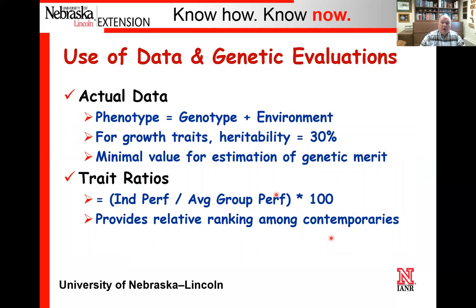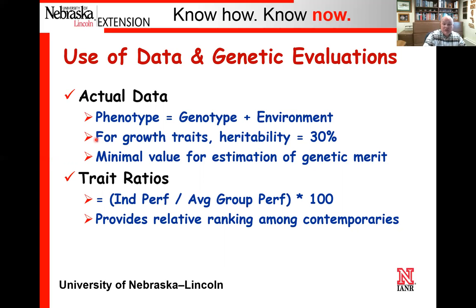Taking that information, we oftentimes collect actual data for making selection decisions. Actual data is the phenotype—based on genetics and environment. For growth traits, assume heritability is 30%. That means 30% of the differences between two animals is actually due to genetics. If animal one weighed 500 pounds and animal two weighed 600 pounds, there's a difference of 100 pounds—30% of that is actually due to genetics. But only half of that gets transmitted to the next generation because the sire contributes half the genetics and the dam contributes half.